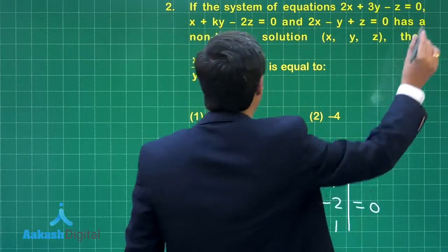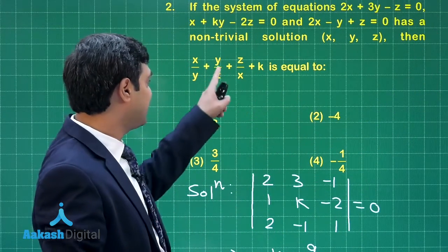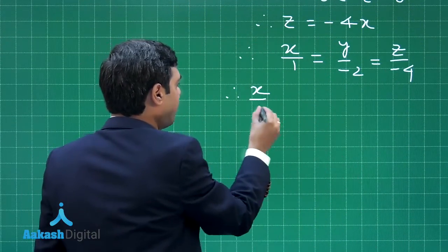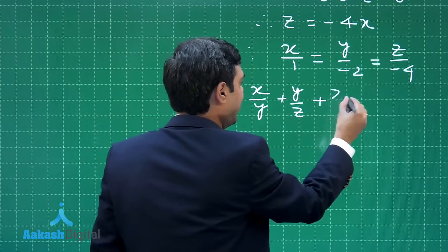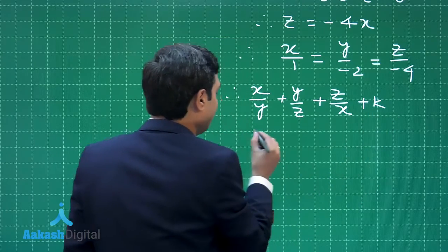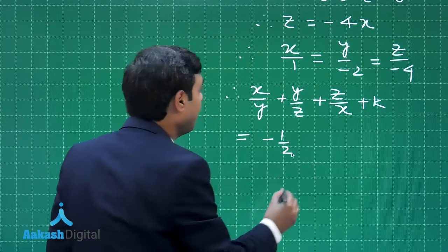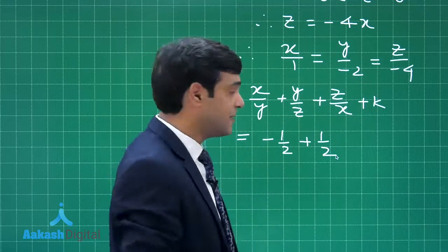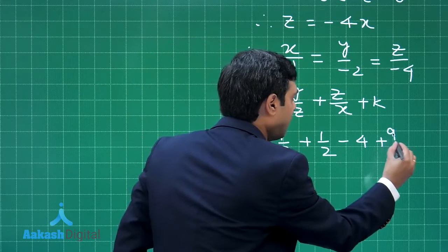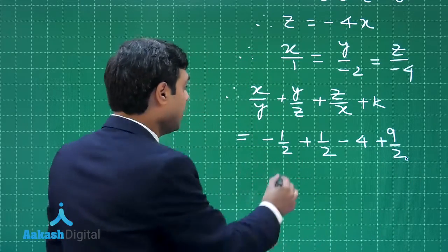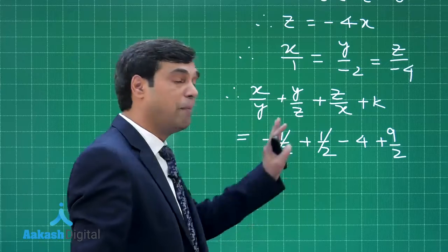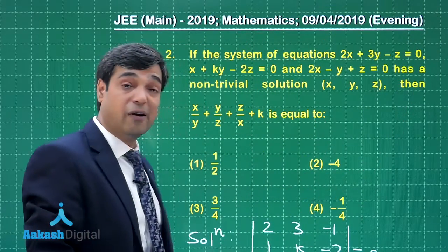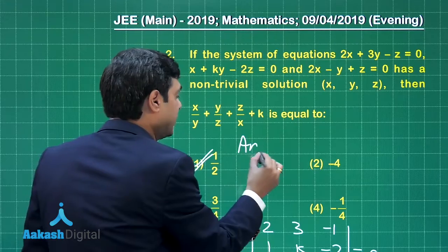We need to find x/y + y/z + z/x + k. Using our ratios: x/y = −1/2, y/z = 1/2, and z/x = −4. With k = 9/2, the expression becomes −1/2 + 1/2 − 4 + 9/2. The halves cancel, leaving −4 + 9/2 = 1/2. From the given options, 1/2 is available as option number 1 — the correct answer.